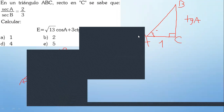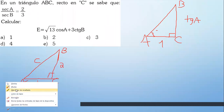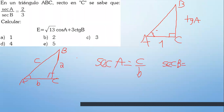Él dice de ahí sale la relación: B sobre A. ¿Qué es secante de A? Secante de A es uno sobre coseno de A. El coseno sería adyacente B sobre C. Inviertan: sería C sobre B. ¿Qué sería secante de B? El ángulo sería hipotenusa C sobre adyacente A. Y ahora les están diciendo secante de A sobre secante de B, o sea, divídanlos.